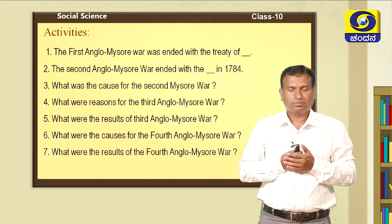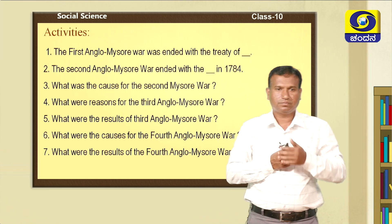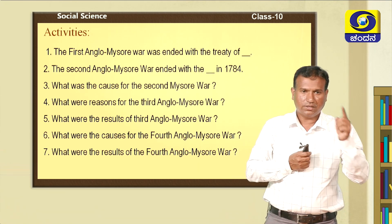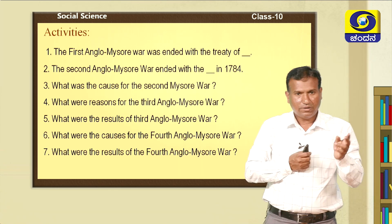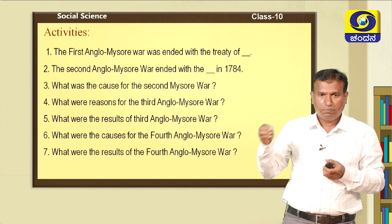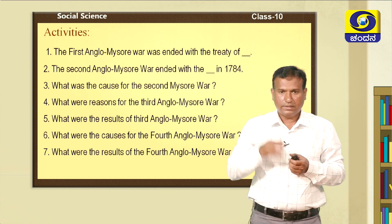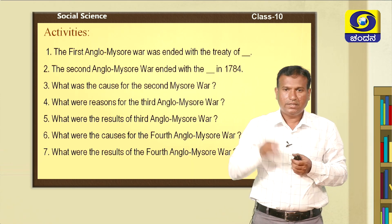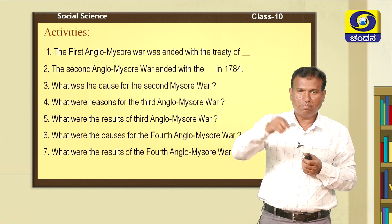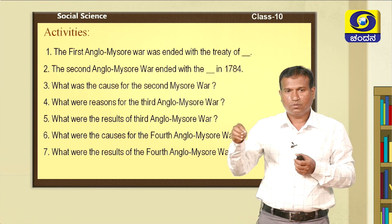Dear students, so far we have discussed Haidrali — how he came to power, how he fought against the English in the First Anglo-Mysore War, and how he continued into the Second Anglo-Mysore War. In the middle of the Second Anglo-Mysore War, Tipu Sultan continued the war and ended it with the Treaty of Mangalur. In the Third Anglo-Mysore War, how he picked the war with the English, and in the Fourth Anglo-Mysore War, after the death of Tipu Sultan, how the territory was shared.